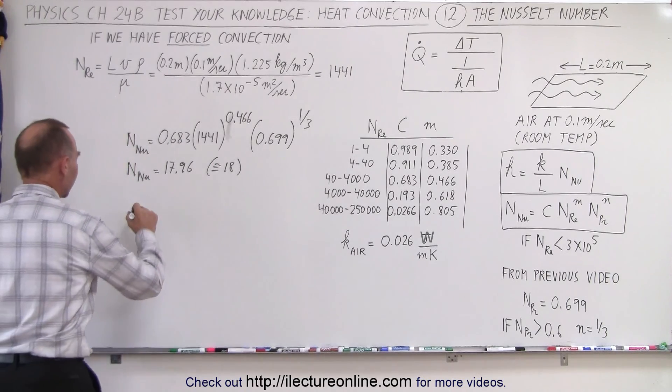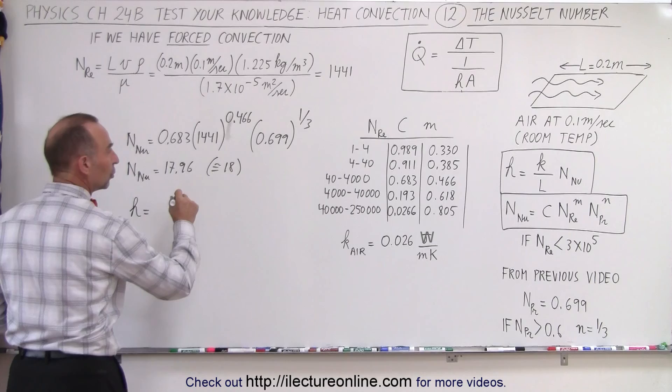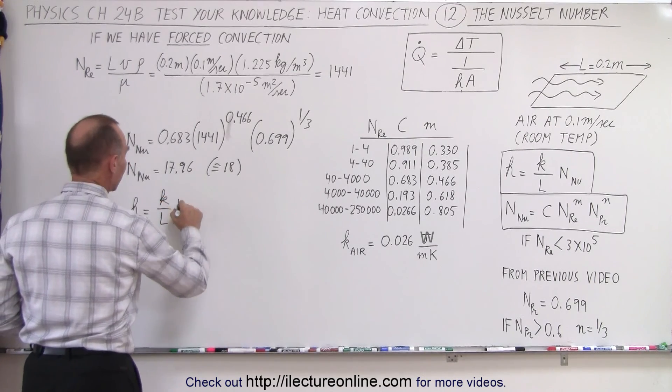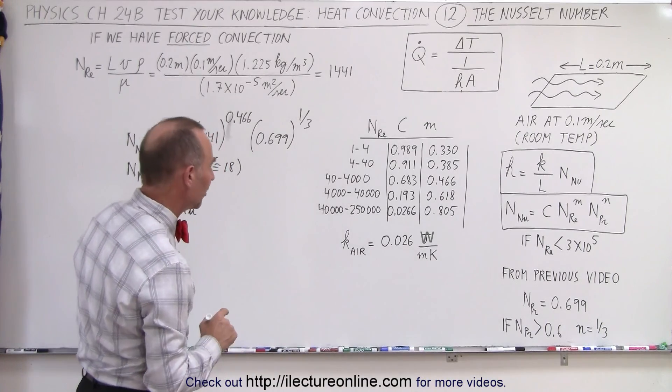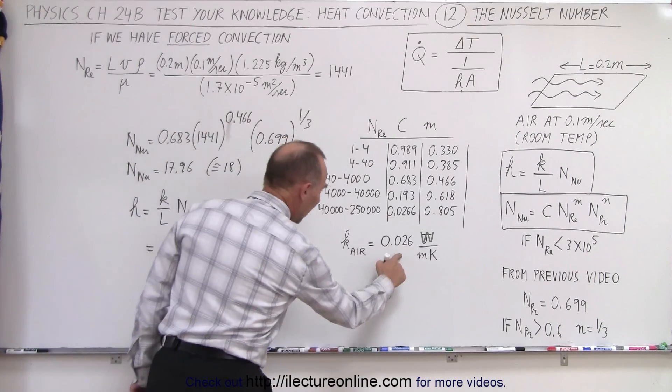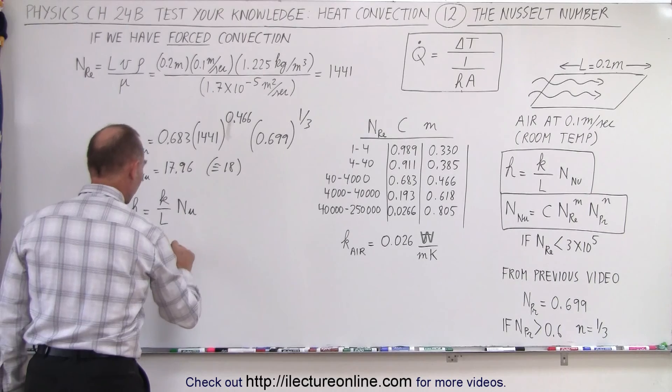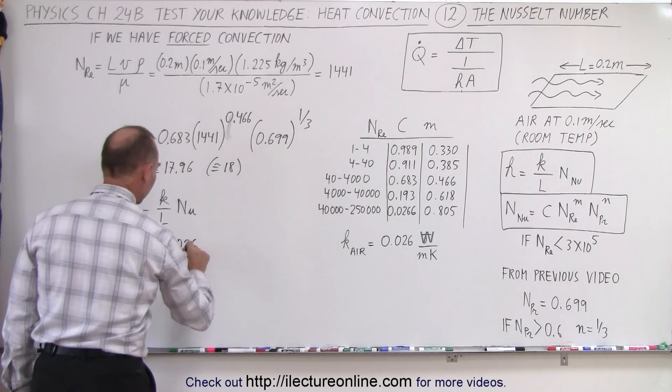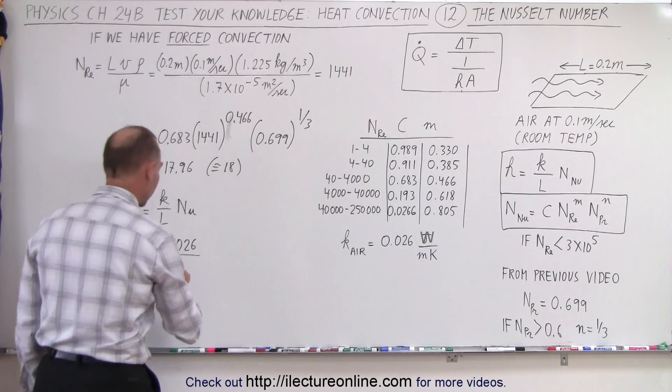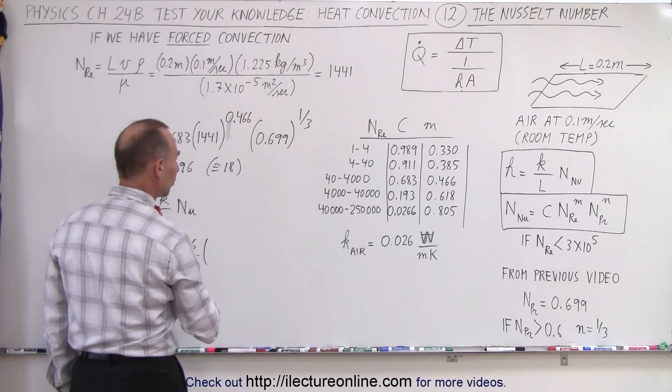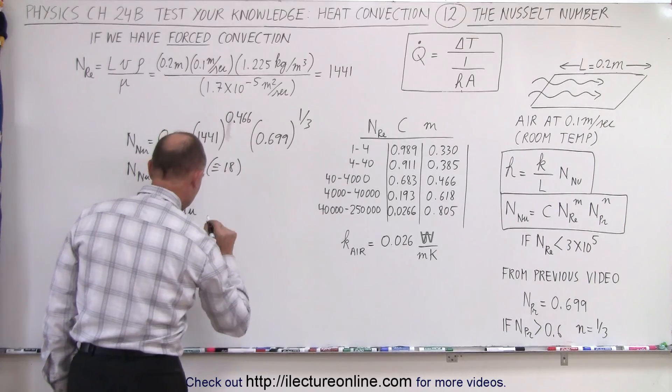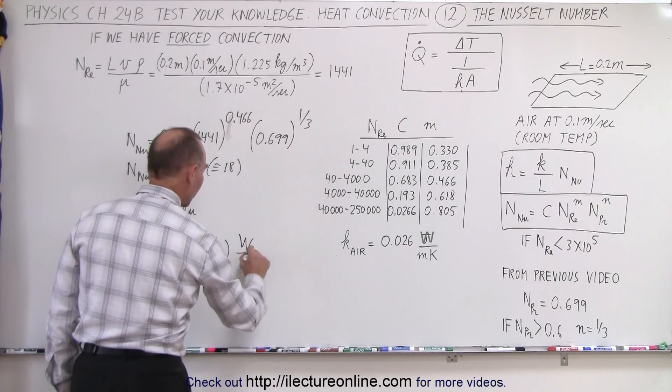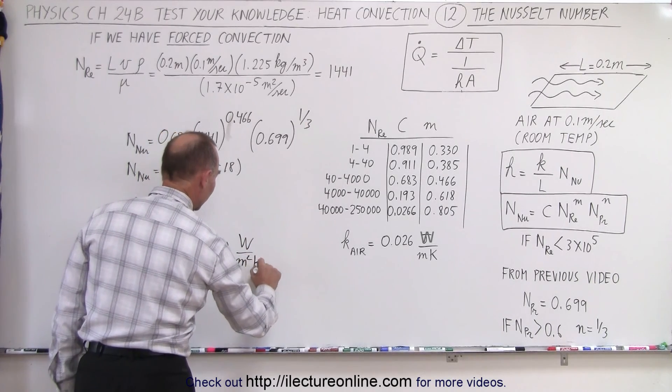Next, we're going to calculate H. H is equal to K over L times the Nusselt number. So in this case, K, let's see here, do I have a K? Yes, I wrote it down. K for air is equal to 0.026 divided by the characteristic length, which is 0.2. And we multiply it times the Nusselt number, which was going to be just, let's make it 18. And that's going to be units of watts per square meter times Kelvin.